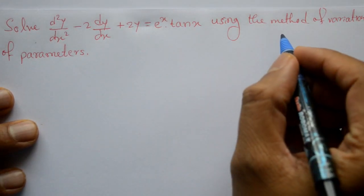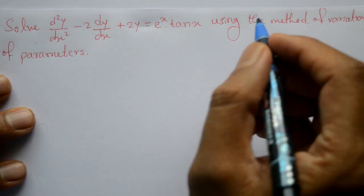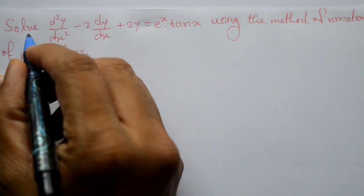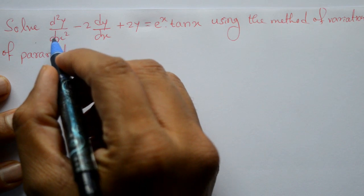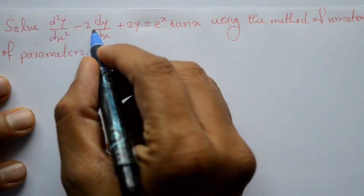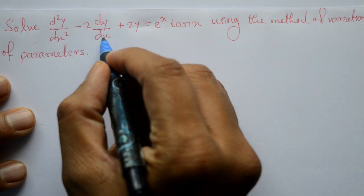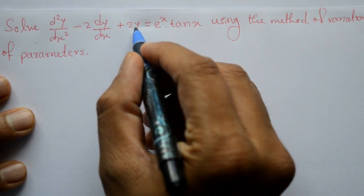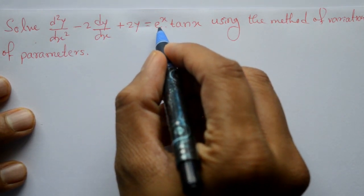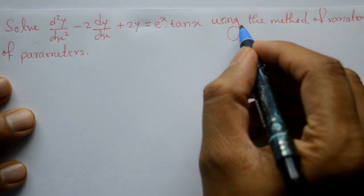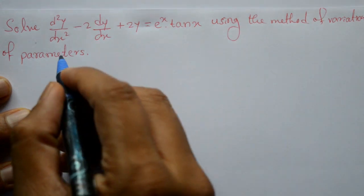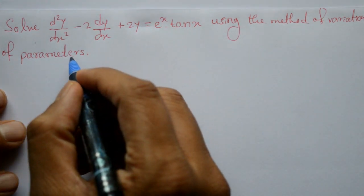Welcome friends. We will solve d²y/dx² minus 2(dy/dx) plus 2y equals e^x times tan x, using the method of variation of parameters.